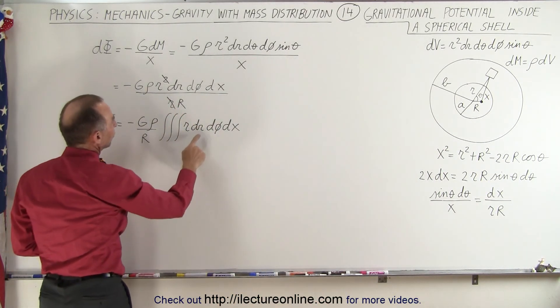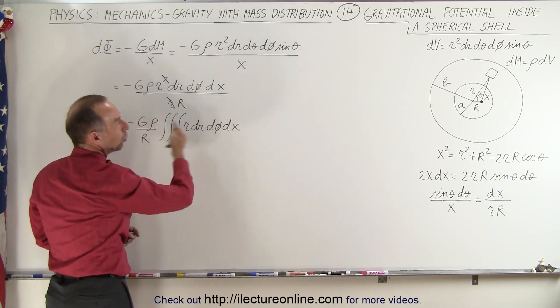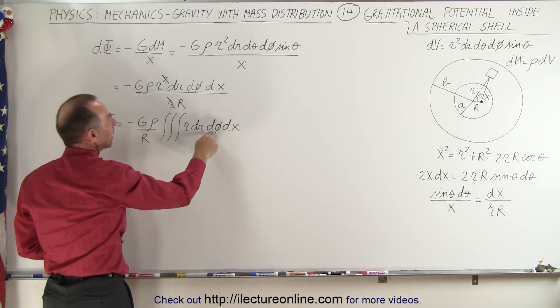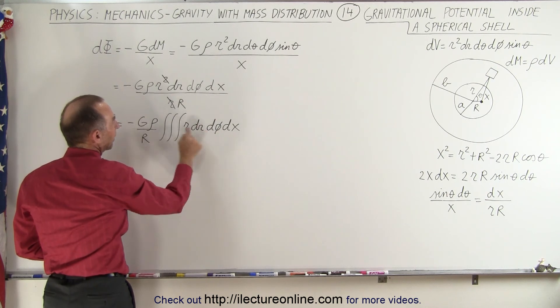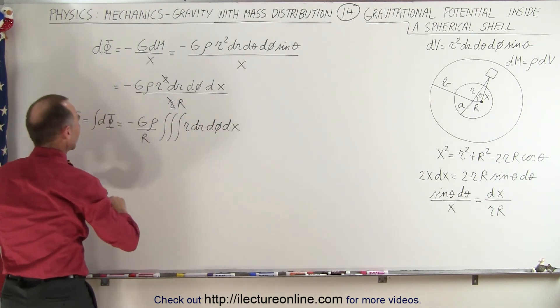Now notice we have three variables r, phi and dx. Phi is rotating all the way around the sphere 360 degrees, so when we integrate d phi, we go from zero to 2 pi, so we can replace the integral of d phi by simply 2 pi and put it outside the integral sign.